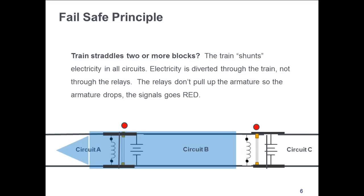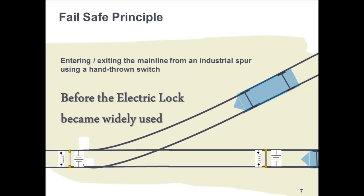When you have short blocks and a long train, the train can occupy more than two or three circuits. Track circuits operate at relatively low voltages, anywhere from 1.5 to 20 volts. That's why it's not dangerous for a person to touch the rails.